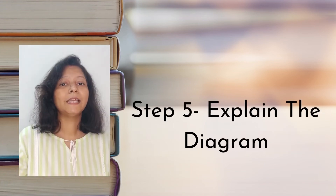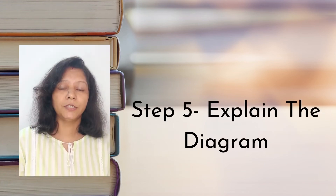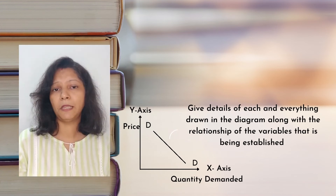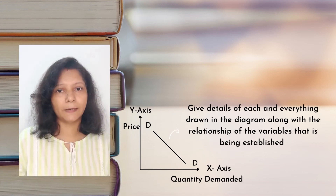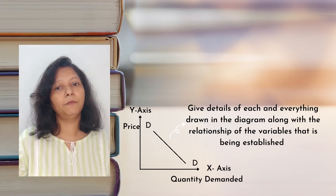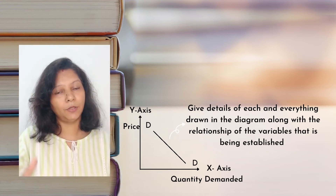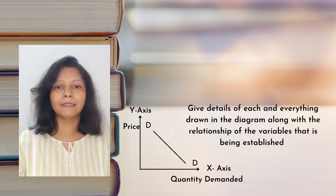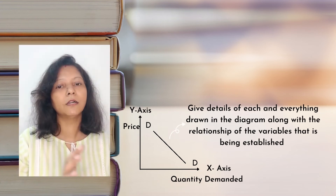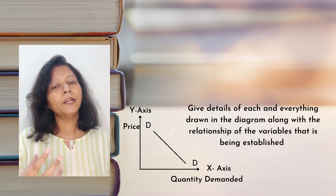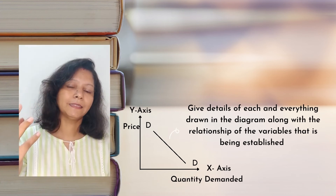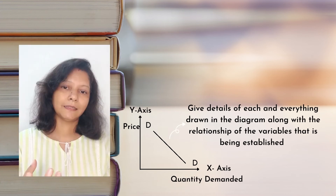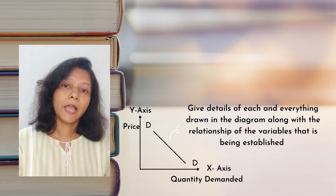The fifth important step is explanation. If you just put the diagram and don't explain it, it's useless — it serves no purpose. You need to explain the diagram: tell what is there, what is on the X axis, what is on the Y axis, how the curve is moving, and what kind of relationship is established between the Y axis and the X axis.